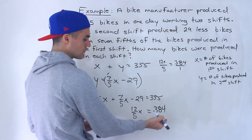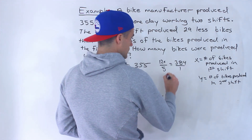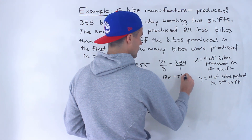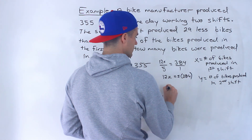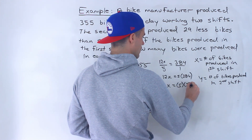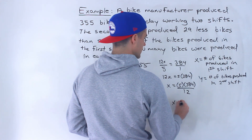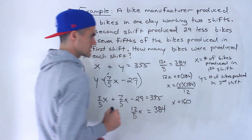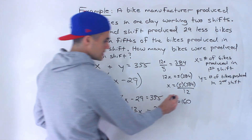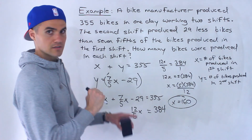We can take 384 divided by 12 over 5. If we cross multiply, we have 5 times 384, then divide both sides by 12. x ends up being 160. That's the number of bikes produced in the first shift.